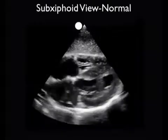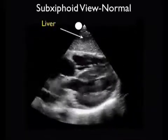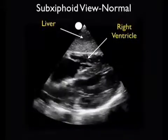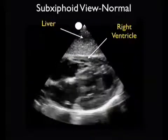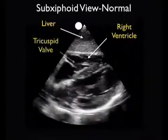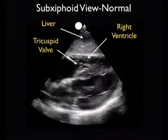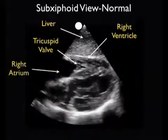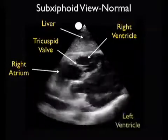Now that we know where the chambers are, let's take a look at a video clip of a normal heart from the subxiphoid plane. The liver is our acoustic window onto the heart from this plane, so the liver will be seen anteriorly just to the top of the screen. Just below the liver, we appreciate the right ventricle, and just to the left of the right ventricle, we can appreciate the right atrium.